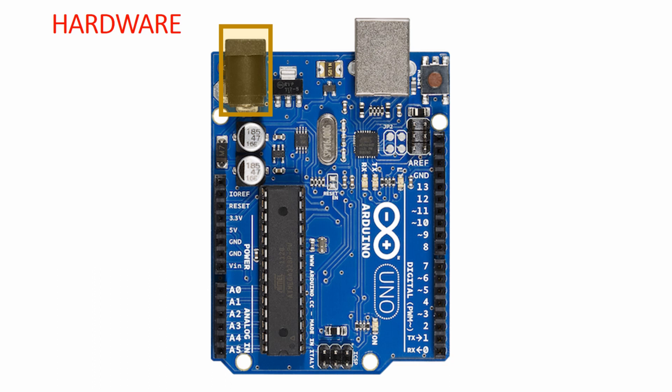Here is the power jack that is available for providing power to the Arduino Uno. Most often we will be using a 12 volt 1 amp adapter for powering up this power jack.